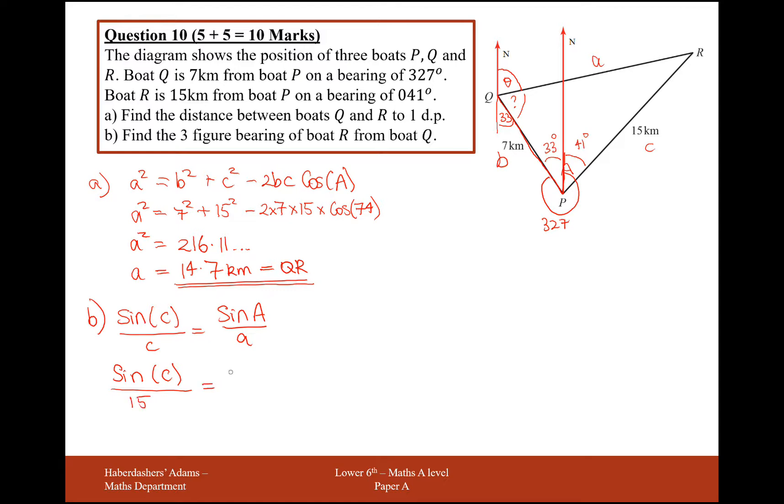Equals sine of 74 over 14.7. But if I've still got 14.7 in my calculator from before, I'm going to be using the answer button there on my calculator. Be really careful to do that. So from here, I'm going to get that sine of C equals 15 lots of sine of 74 over 14.7.